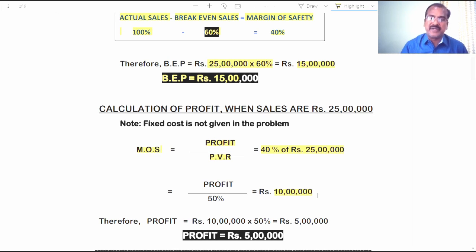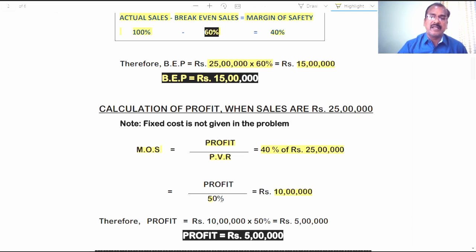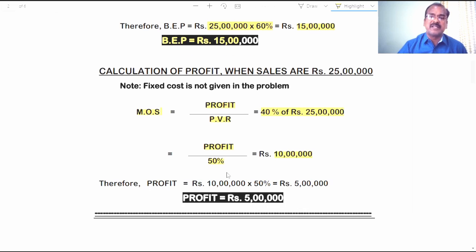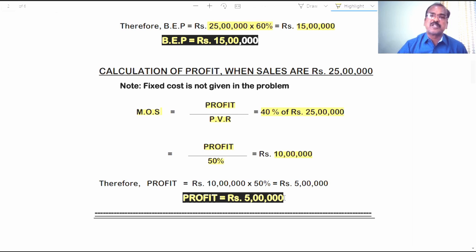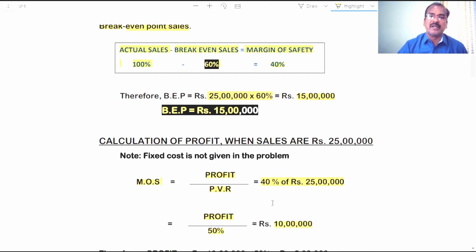Profit divided by PVR equals 40 percent of 25 lakhs, which comes to 10 lakh rupees. So when the sale is 25 lakhs, Margin of Safety is 10 lakh rupees. Applying this: MOS is 10 lakh rupees and PVR is 50 percent, therefore Profit equals 10 lakh into 50 percent, which comes to 5 lakh rupees. When the company makes sales of 25 lakh rupees, it earns a profit of 5 lakh rupees.